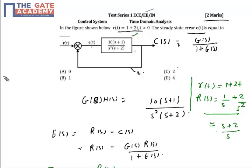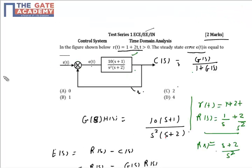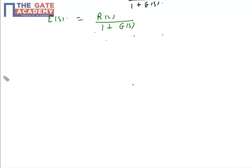This is your R(s). Now put the value of R(s) and G(s) in the expression of the error signal E(s).